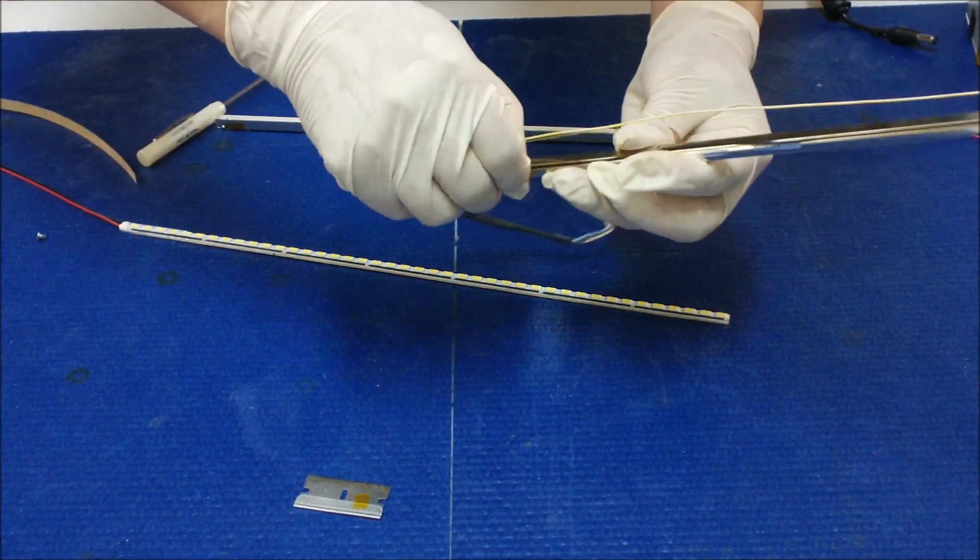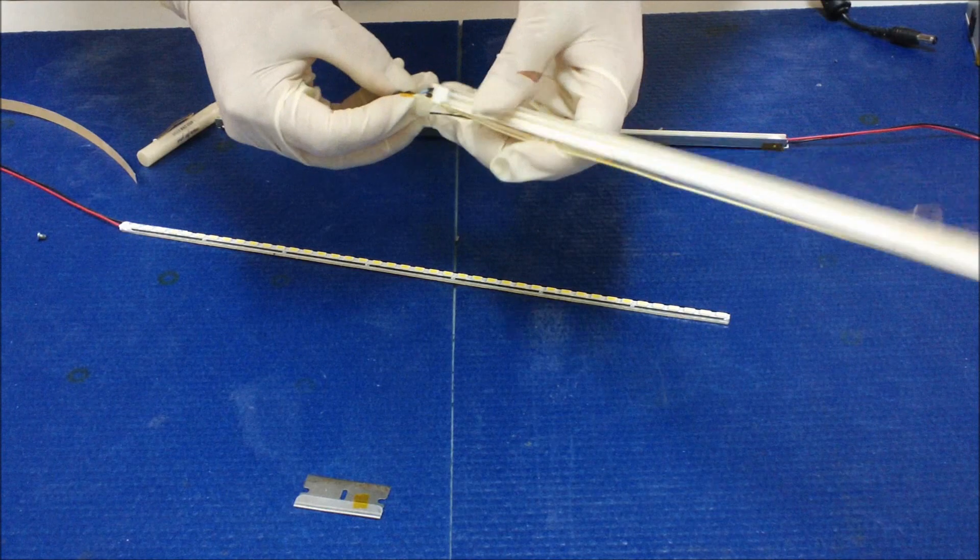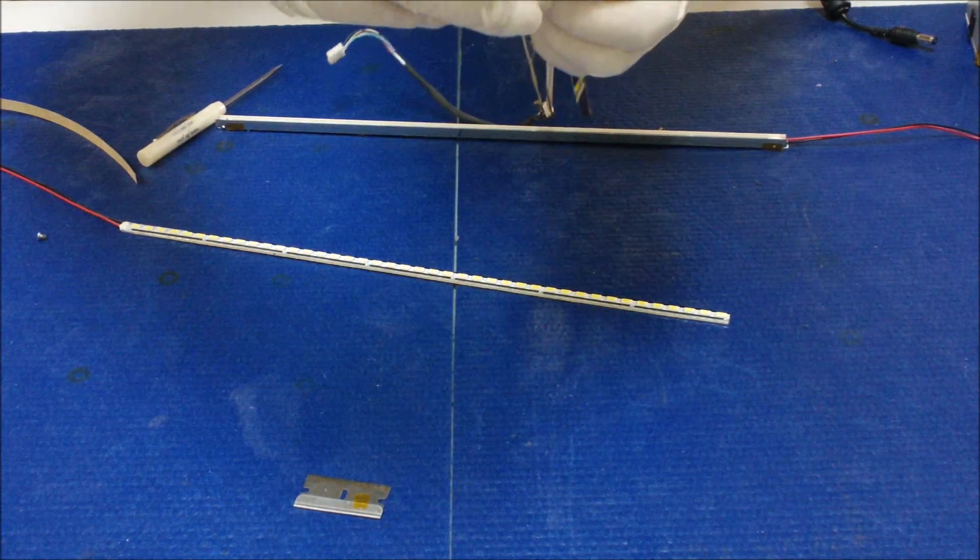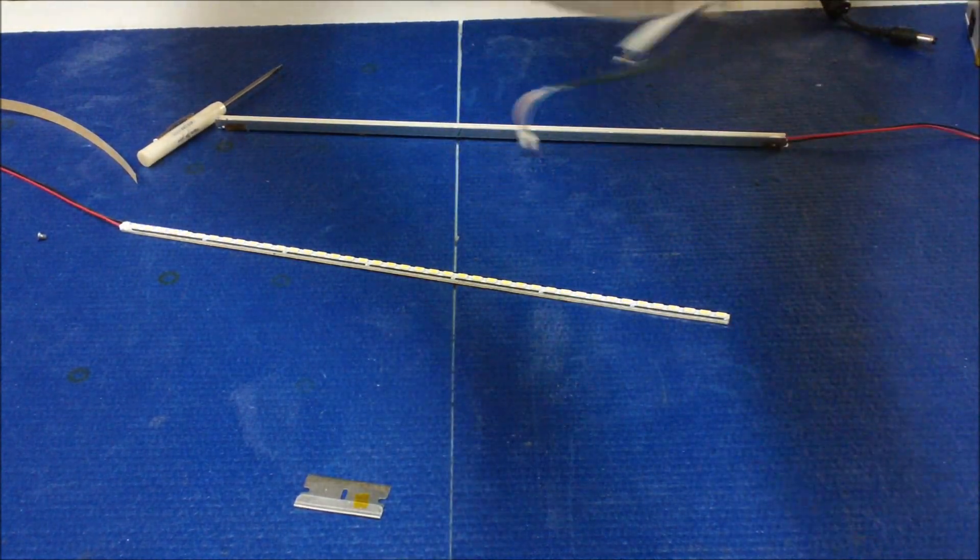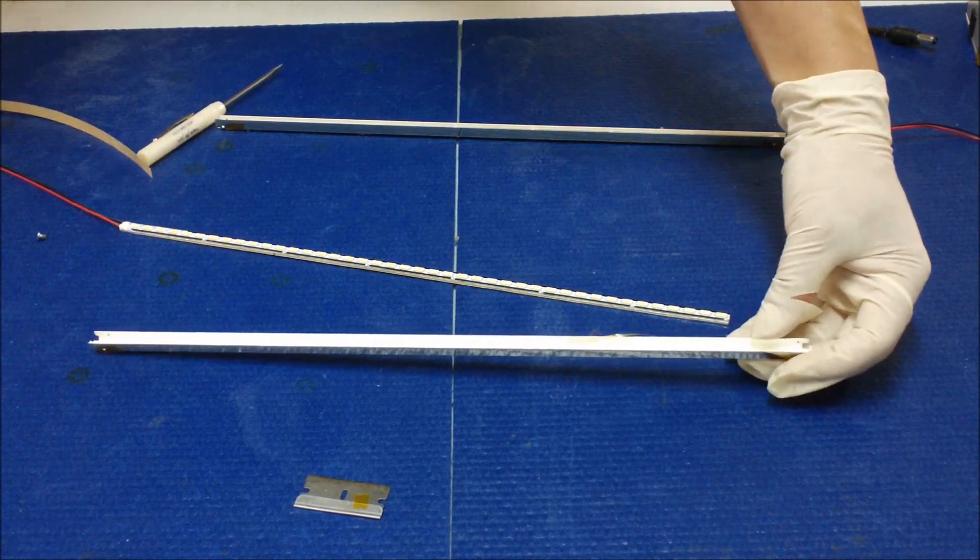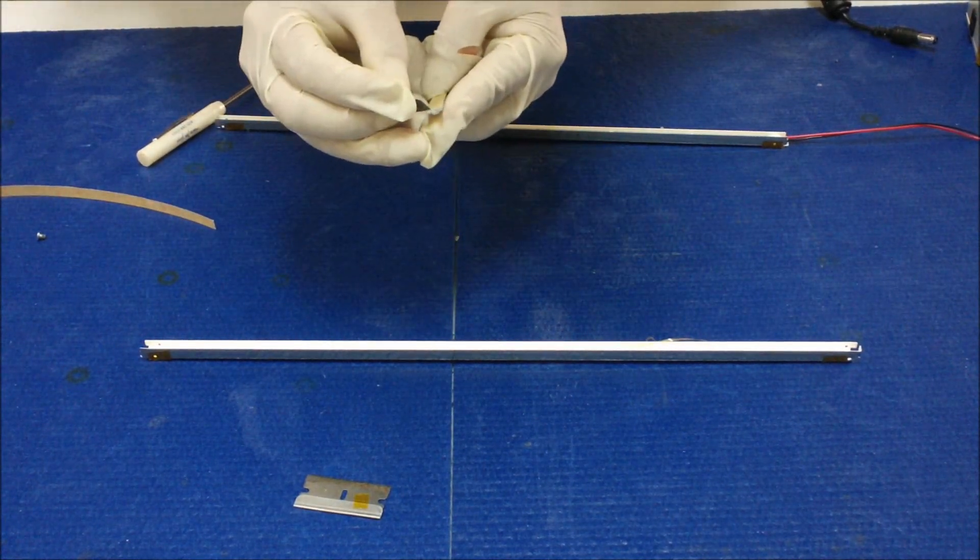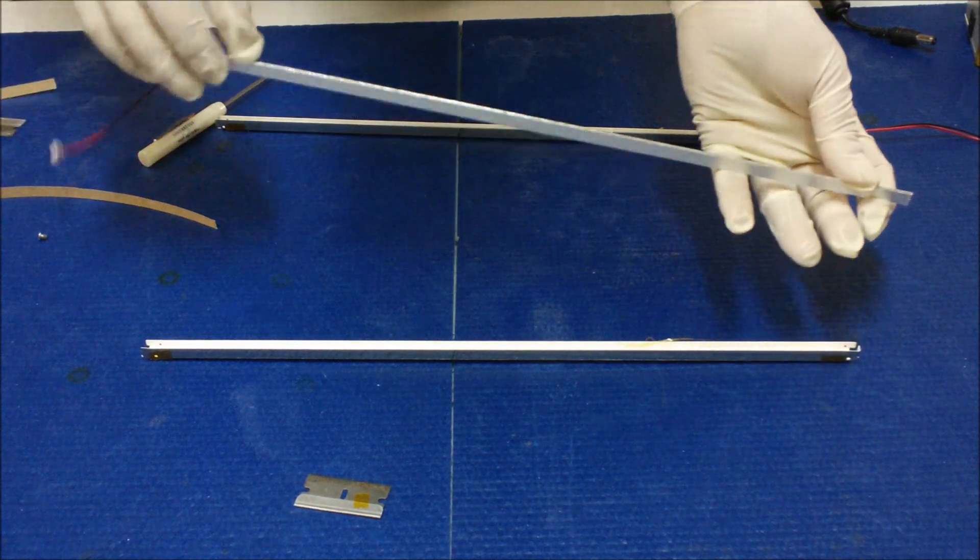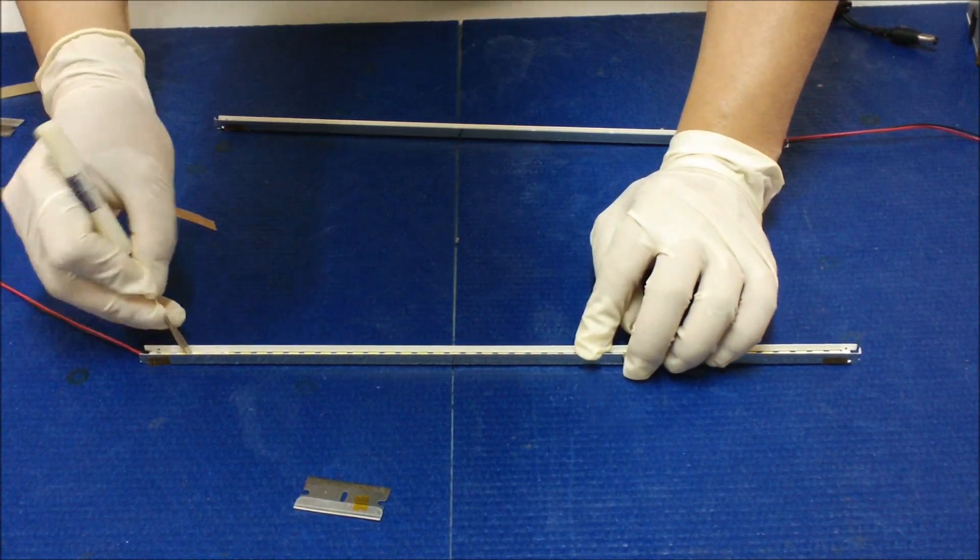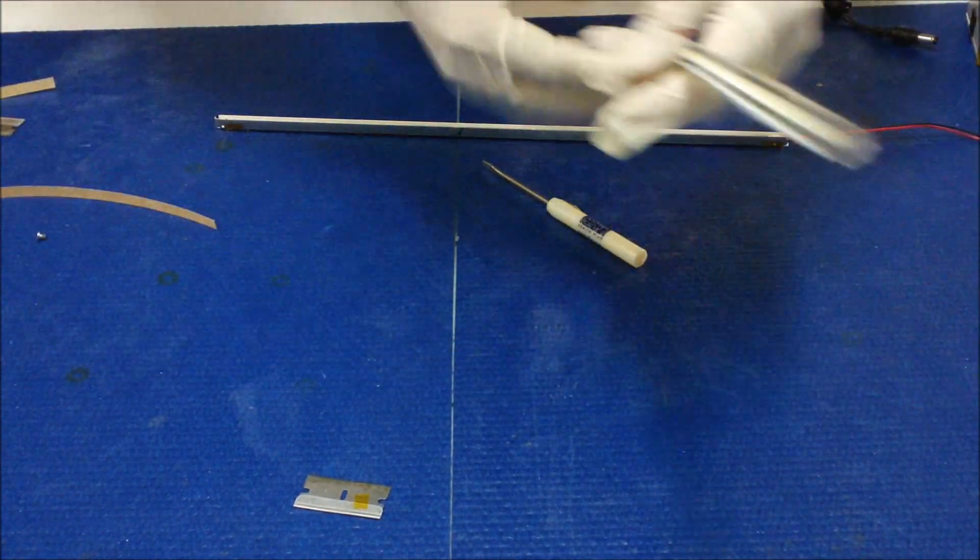And you can loosen up. We're gonna do the same thing I just did. Remove it, put it in the center. Push it down. Make sure it has good contact with the reflector. Now they're both ready to put back to the plexiglass.